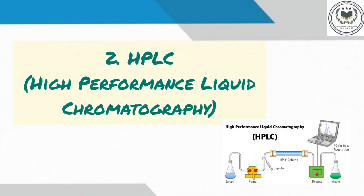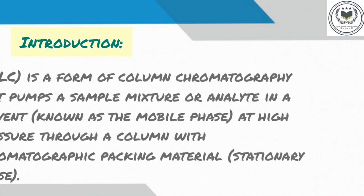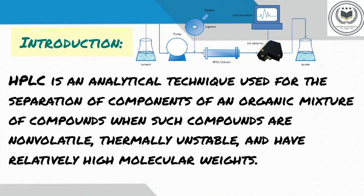Let's move on to high performance liquid chromatography. High performance liquid chromatography, commonly abbreviated as HPLC, also known as high pressure liquid chromatography, is a form of column chromatography that pumps a sample mixture or analyte in a solvent known as the mobile phase at high pressure through a column with chromatographic packing material as the stationary phase. HPLC is an analytical technique used for the separation of components of an organic mixture of compounds when such compounds are non-volatile, thermally unstable and have relatively high molecular weights.